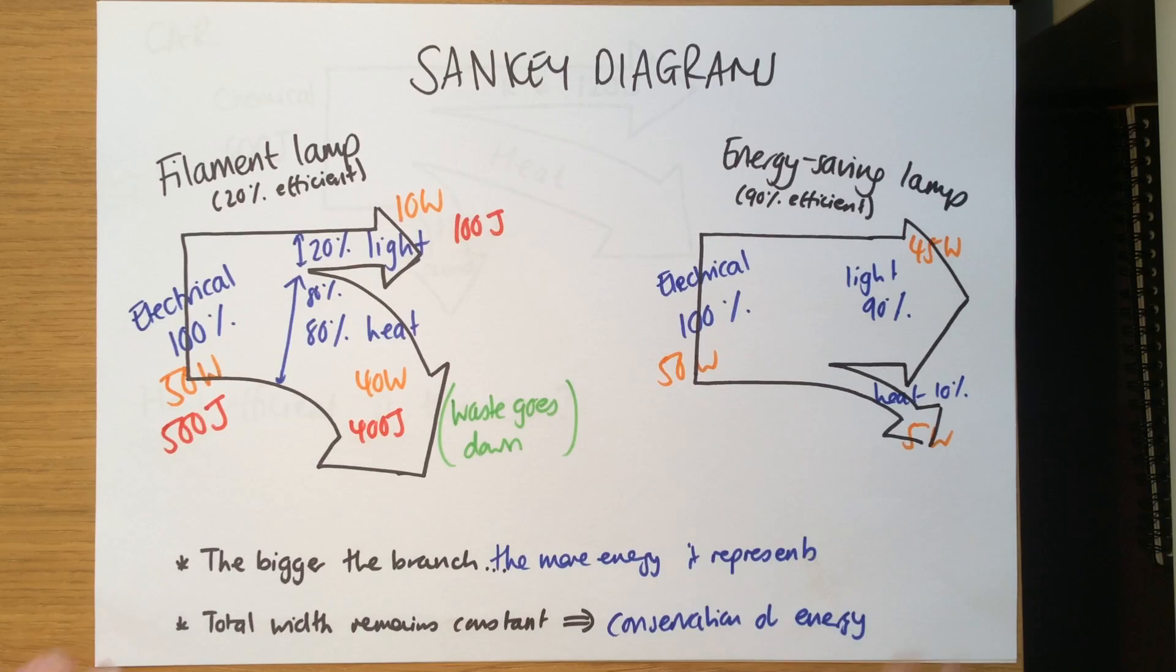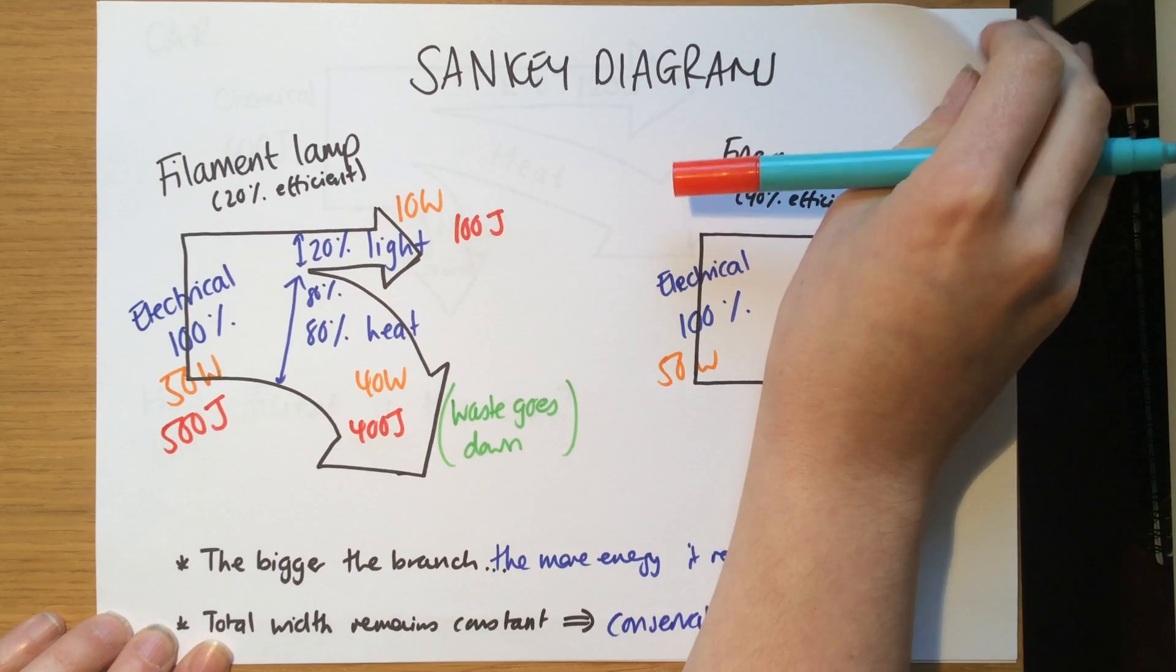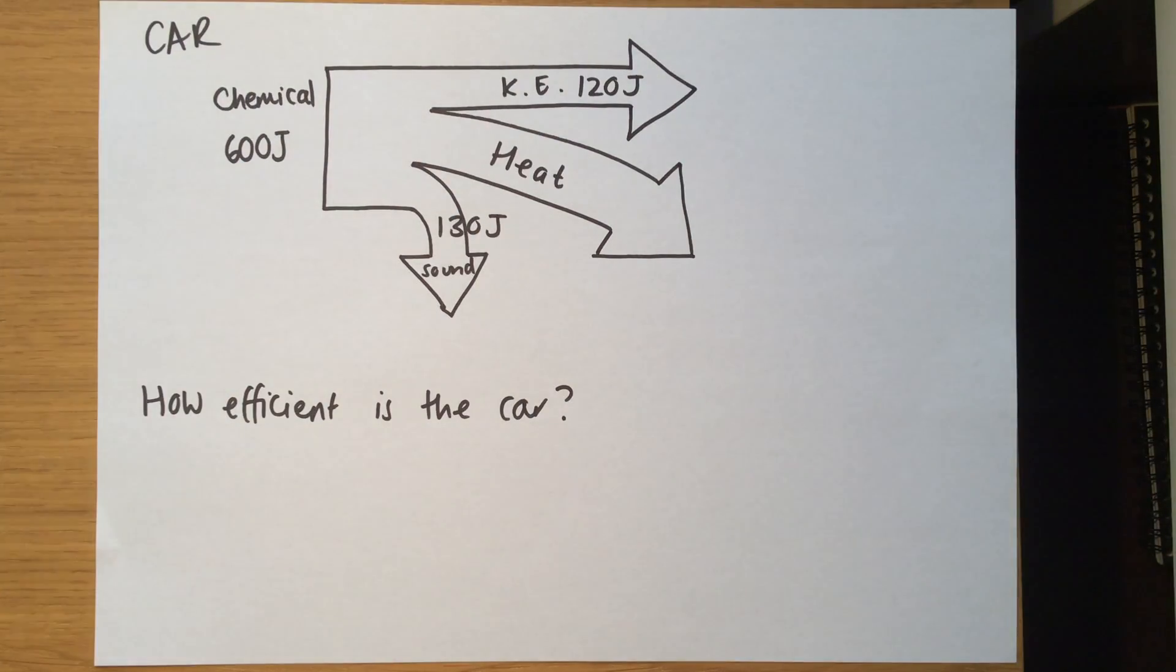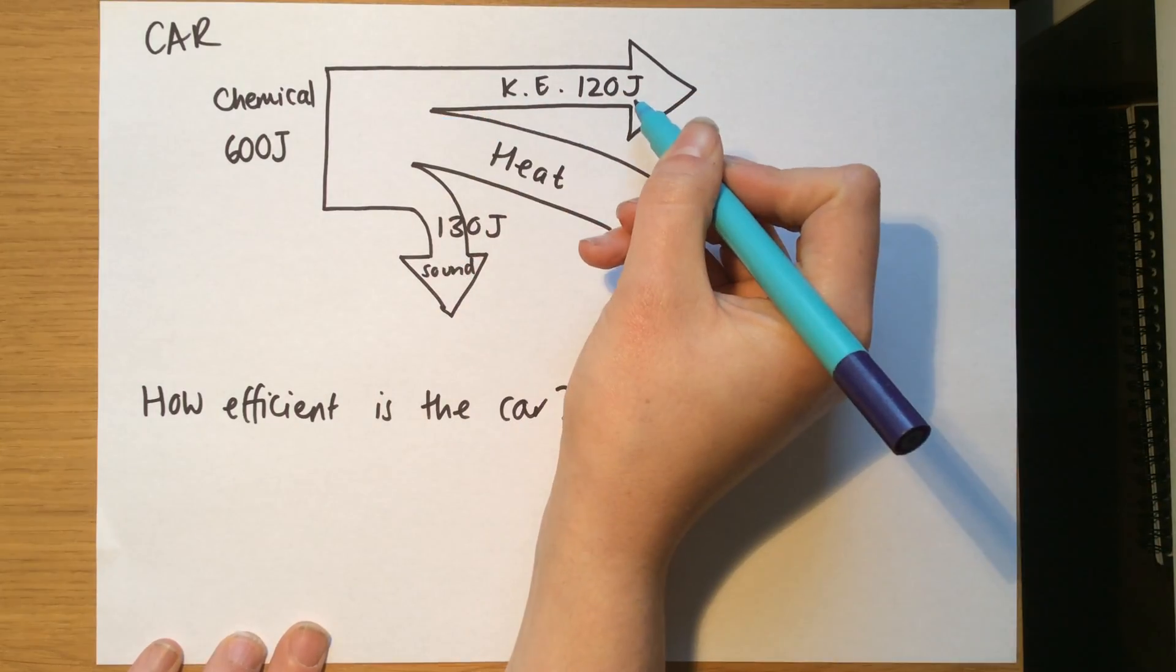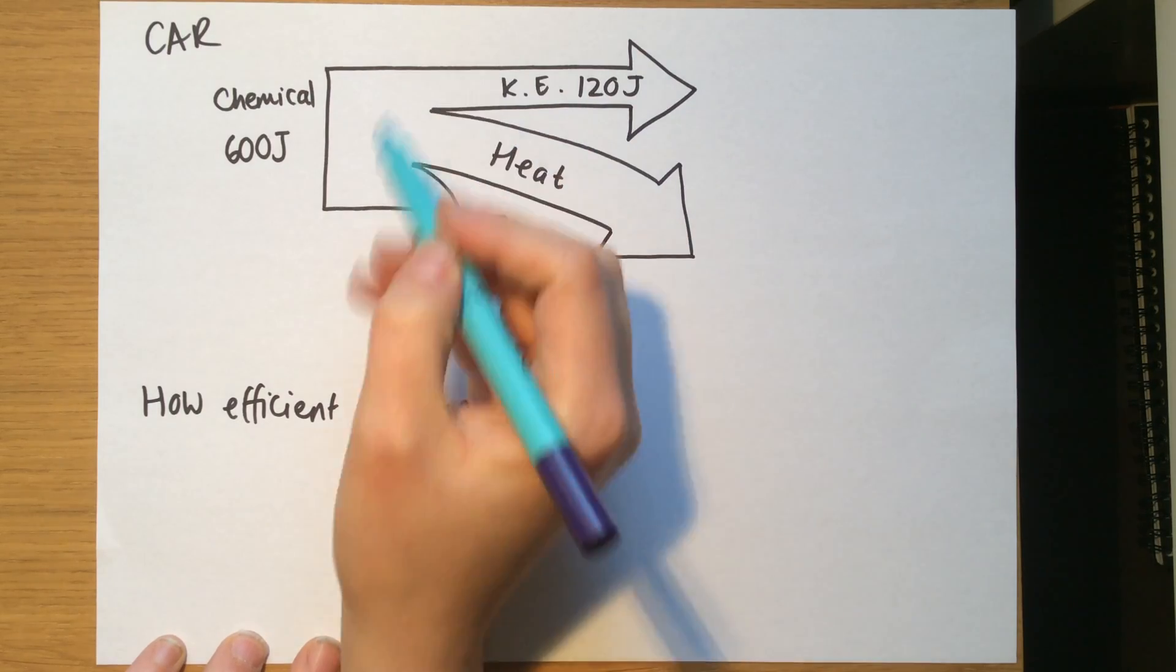Let's look at a problem that uses Sankey diagrams which might be presented to you in an exam. We've got here a car. The car uses 600 joules per second. 120 joules are converted into KE, 130 joules are converted into sound. So we need to work out now how much is converted into heat.